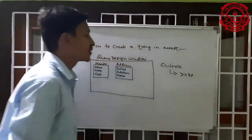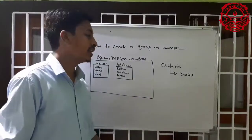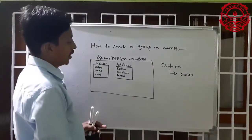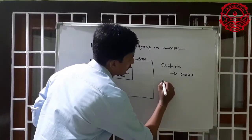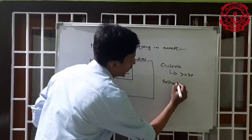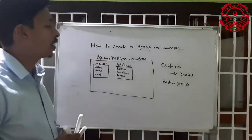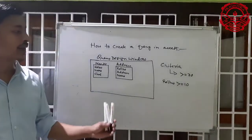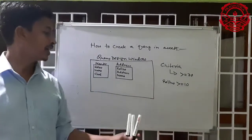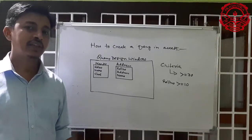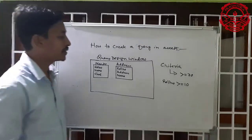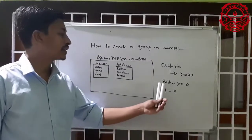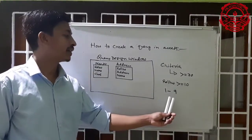For example, I want the roll number condition to be: roll number greater than or equal to 10. Those roll numbers that are greater than or equal to 10 will be displayed. Roll numbers 1, 2, and 9 will be skipped by the query because they are not in the condition — the condition is not fulfilled. Numbers from 10 onward — all those records will appear.